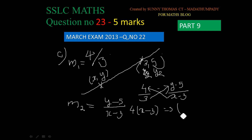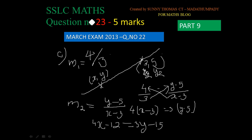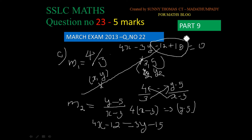y minus 5 equals 4 by 3 times x minus 3. So 3 times y minus 5 equals 4x minus 12. That gives 4x minus 12 equals 3y minus 15. Rearranging: 4x minus 3y plus 3 equals 0. Thank you.